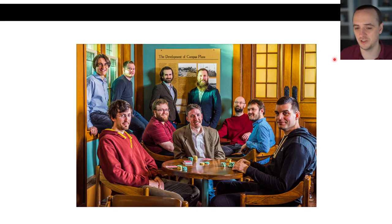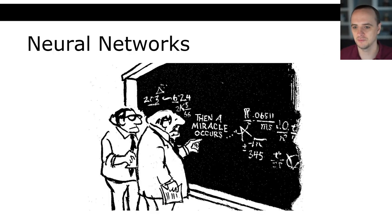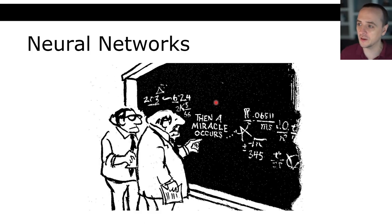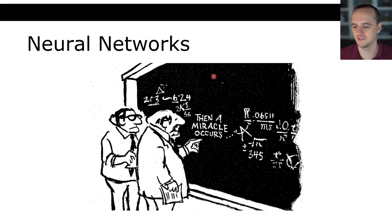Deep learning became a very big thing. But if you ask a lot of people how neural networks work, you get this famous comic — you feed in some inputs, something happens, and you get the right outputs. The point of today's class is to demystify this middle part and say what is kind of happening in a neural net that lets you get cool results.